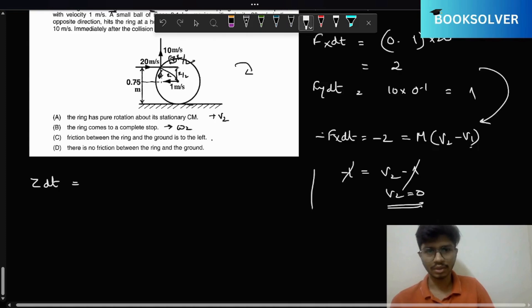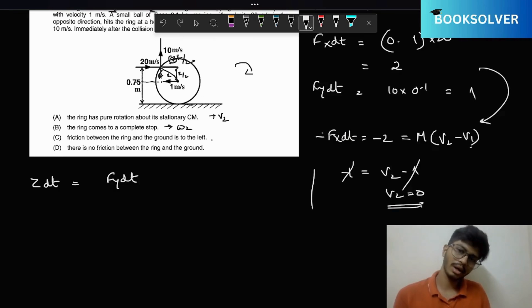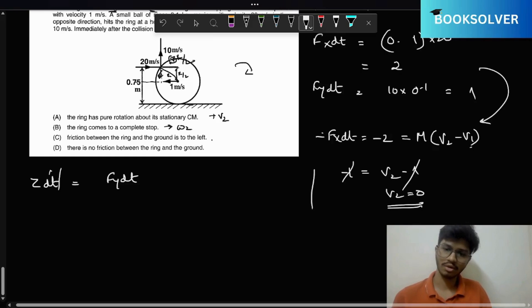We'll put this over here. Fy dt into root 3 into r by 2 is basically 0.25 plus Fx dt into root 3 into 0.25. So this will come out to be 1. Fy dt is 1, so root 3 by 4 plus Fx is 2, so the root 3 is not there.